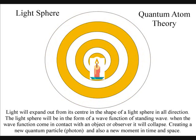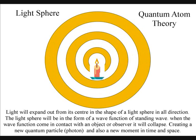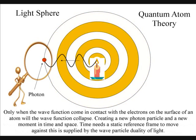This quantum particle will take the form of a photon and will need a position in space and time that the wave function never had. Therefore we have a new moment in time and space created by the smallest unit of radiant energy, the Planck constant.